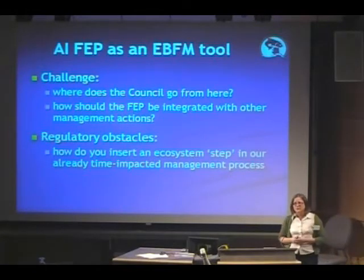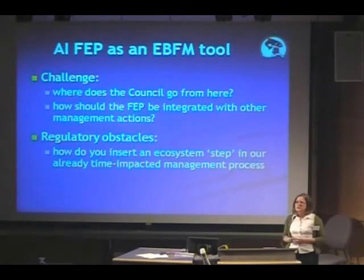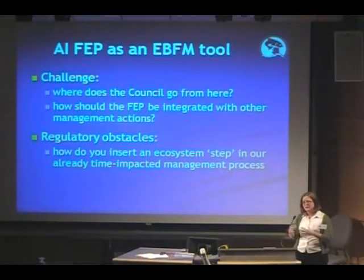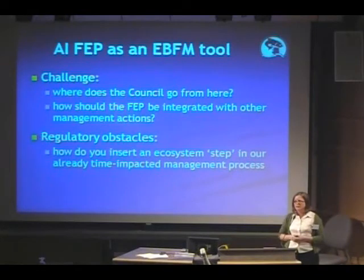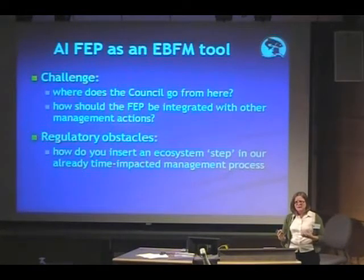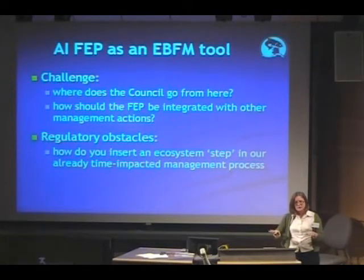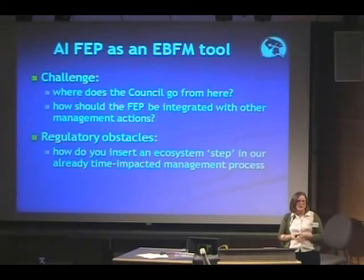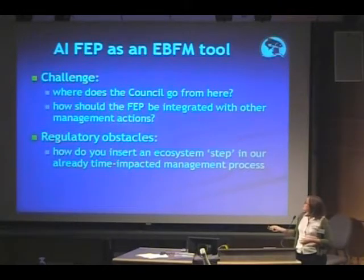The council, as part of the annual ecosystem report that comes at harvest specifications, is getting updates on these indicators. But how do we make this more relevant and integrate it with what we're doing? In terms of regulatory obstacles, the harvest specification process is a pretty time-impacted process — from the time you get your information to the time you've got to start a fishery on that new data. How do you insert an ecosystem step into that process is one of the things we've been struggling with, and it was highlighted in the FEP as an issue.